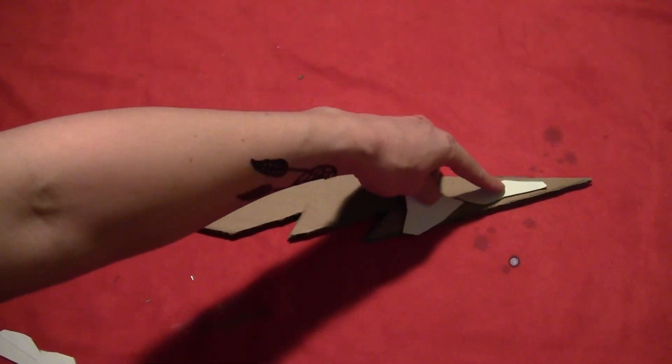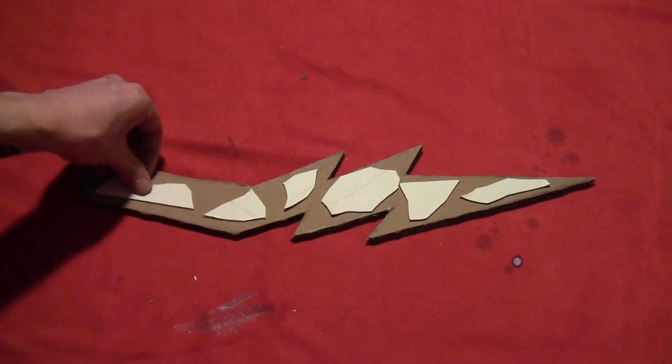Then out of some thinner cardboard, cut a bunch of randomly shaped pieces and just glue them onto the dagger.